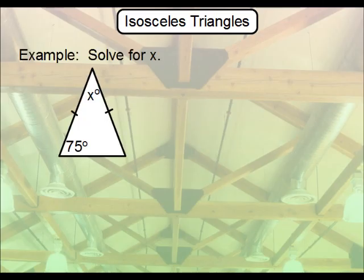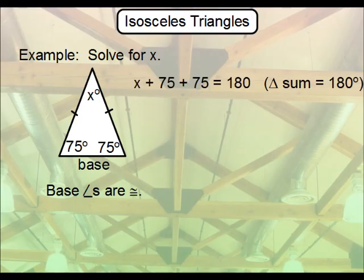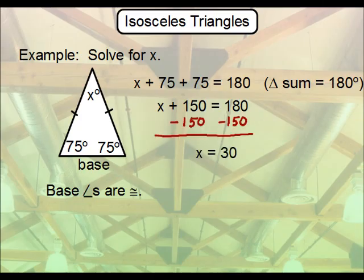Let's do an example. Solve for X. Hopefully you recognize that this side is the base, and because of that, we know that the base angles are congruent. So if this angle is 75 degrees, so is the angle on the right. Since the three angles of a triangle total 180 degrees, we write X plus 75 plus 75 equals 180. Collect the like terms — 75 plus 75 equals 150 — then subtract 150 from both sides to solve for X.